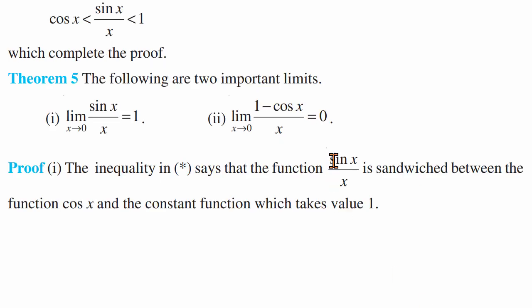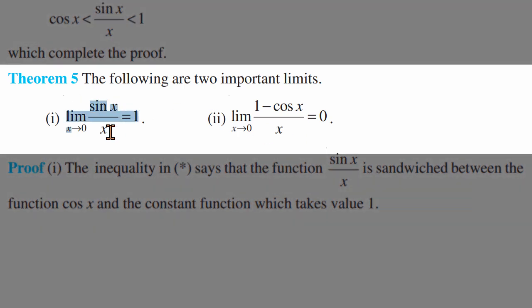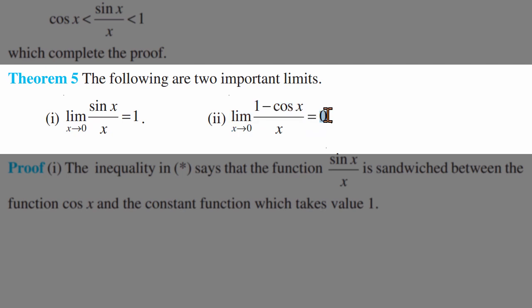Trigonometric limits are important. First: limit of sin x divided by x as x tends to 0 is equal to 1. Second: limit of (1 − cos x) divided by x as x tends to 0 is equal to 0. So sin x over x → 1, and (1 − cos x) over x → 0 as x tends to 0.